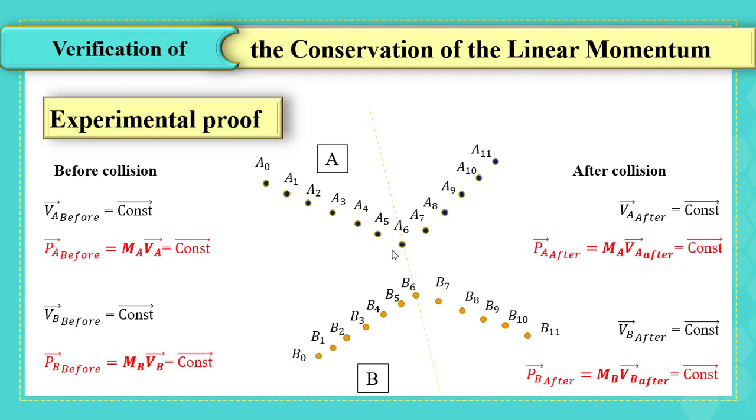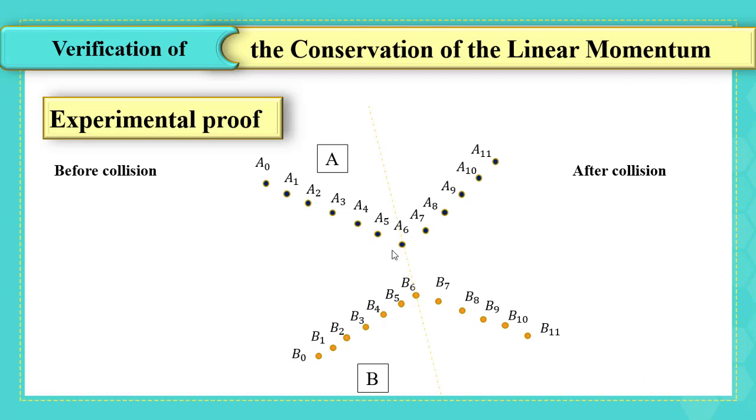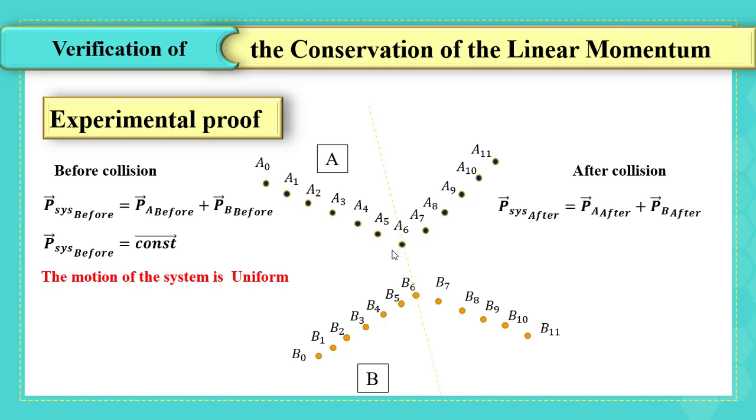But, focusing on comparing the linear momentum of the system before and after collision, we will calculate the linear momentum of the system as the sum of the linear momentum of A before and of B before collision. Then, the linear momentum of the system will be constant too, and the motion of the system is uniform. Likewise, for the system after collision, it is the sum of linear momentum of A and the linear momentum of B, which is constant vector, and the motion of the system is uniform.